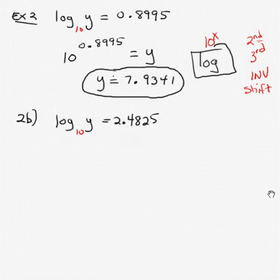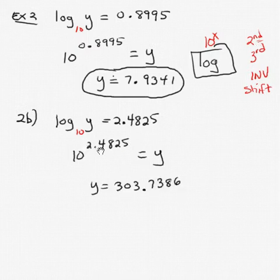Alright, again, same kind of game. Rewrite it as an exponent, the base 10 to the power 2.4825. We're going to use this button or function on our calculator. 10 to the 2.4825 power is 303.7386. Remember, we're rounding everything off to 4 decimal places. Some of our calculators do 8 decimal places, some 10, some 12. So if we round everything off to 4, we'll all get the same answer.